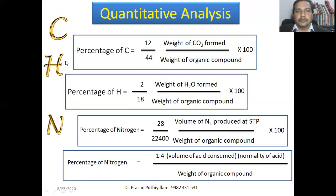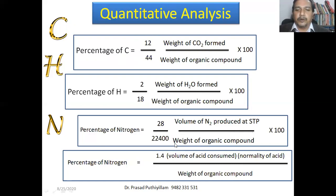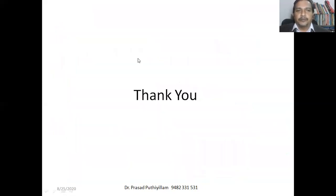So we have estimated carbon, hydrogen, and nitrogen. To summarize: Percentage of carbon = (12/44) × (weight of CO₂ formed / weight of organic compound) × 100. Percentage of hydrogen = (2/18) × (weight of water or steam formed / weight of organic compound) × 100. Percentage of nitrogen by Dumas method = (28/22400) × (volume of nitrogen at STP / weight of organic compound) × 100. Percentage of nitrogen by Kjeldahl method = 1.4 × (volume of acid consumed) × (normality of acid) / weight of organic compound. Thank you very much for watching — please share your feedback and doubts in the comment box or on the WhatsApp number given. Please subscribe to my YouTube channel 'My Intuition.' Thank you.